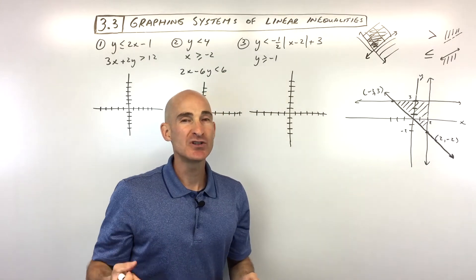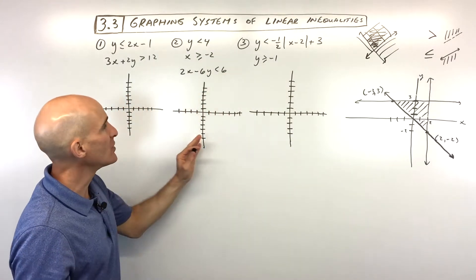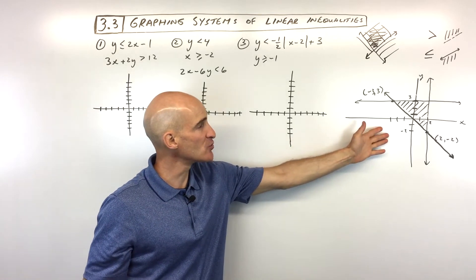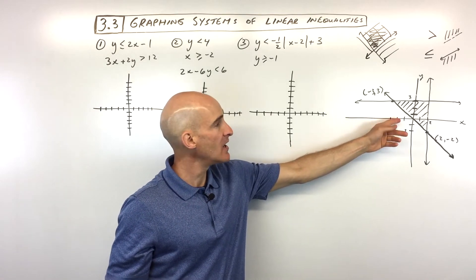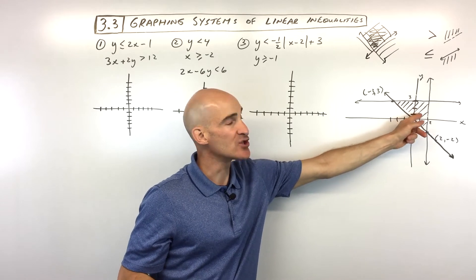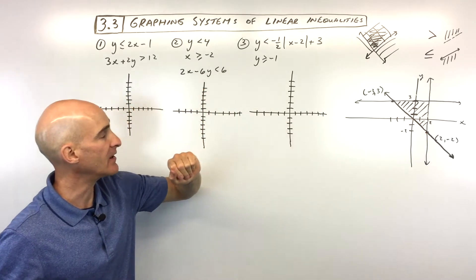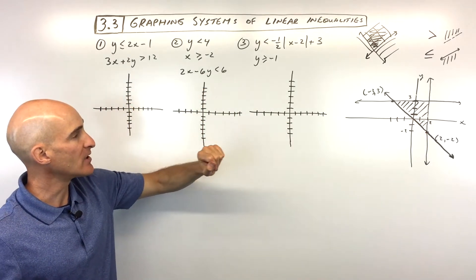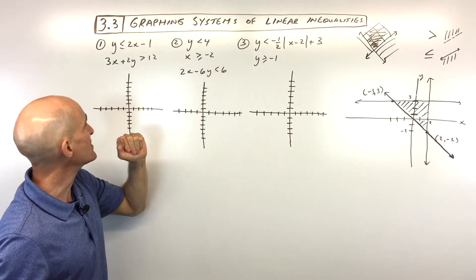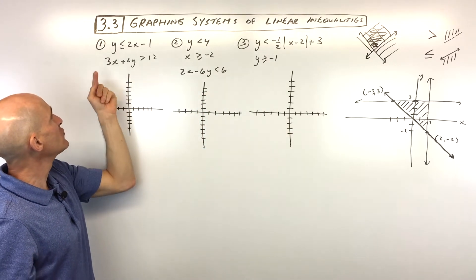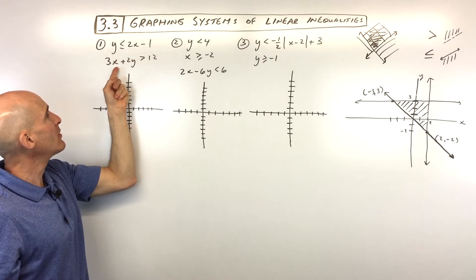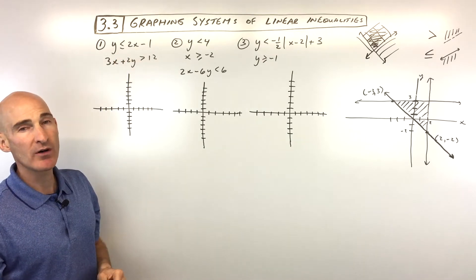Let's jump into some examples — see if you can do these on your own. Pause the video. We've got four examples. The last one, we're actually going to write the inequalities that satisfy a given solution set of points. We want to find the three inequalities that make that region our solution set. For number one: y is less than or equal to 2x minus 1, and 3x plus 2y is greater than 12.